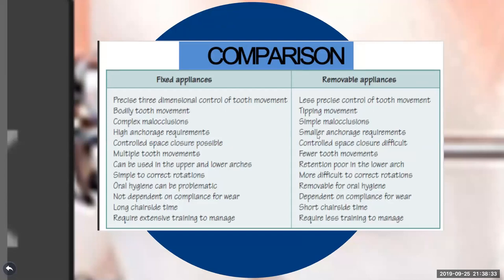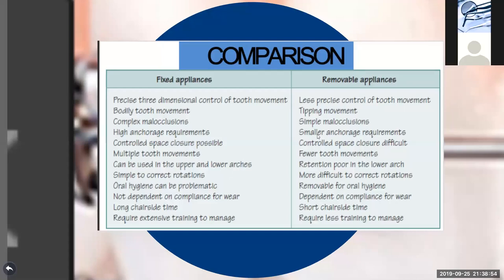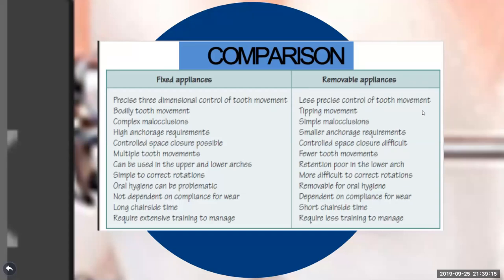The anchorage requirement in fixed appliances is much greater because bodily movement and apex movement are executed. With removable appliances, only tipping movement is performed, which requires less anchorage. In removable appliances, the whole palate can be used for anchorage, but in fixed appliances, we cannot use the full palate. An appliance called the NANCE appliance can be used for anchorage with fixed appliances.